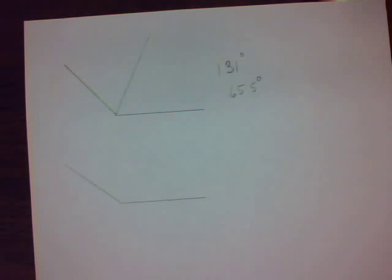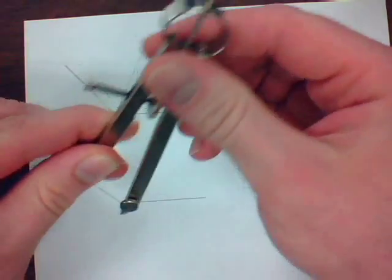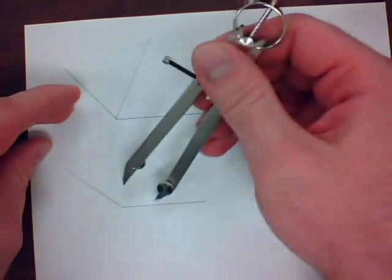Another technique for bisecting involves using our compass. This is a little bit more complicated. You're going to begin by creating an arc that will intersect both arms of your angle.